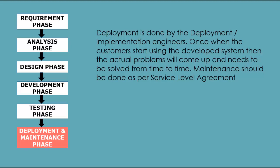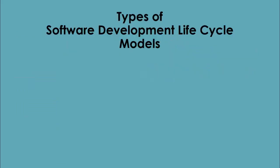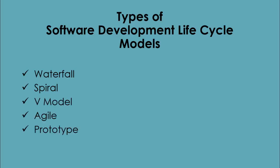100% testing is not possible because the way testers test the product is different from the way customers use the product. Maintenance should be done as per the service level agreement. Let's see the types of software development lifecycle models: waterfall and other related models such as Rapid Application Development, Rational Unified Model, and Hybrid Model. We will see the most important software development lifecycle models in detail in the upcoming videos.